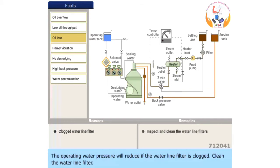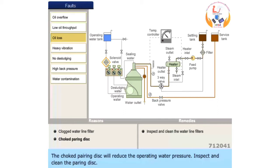Clean the water line filter. The choked paring disk will reduce the operating water pressure. Inspect and clean the paring disk.